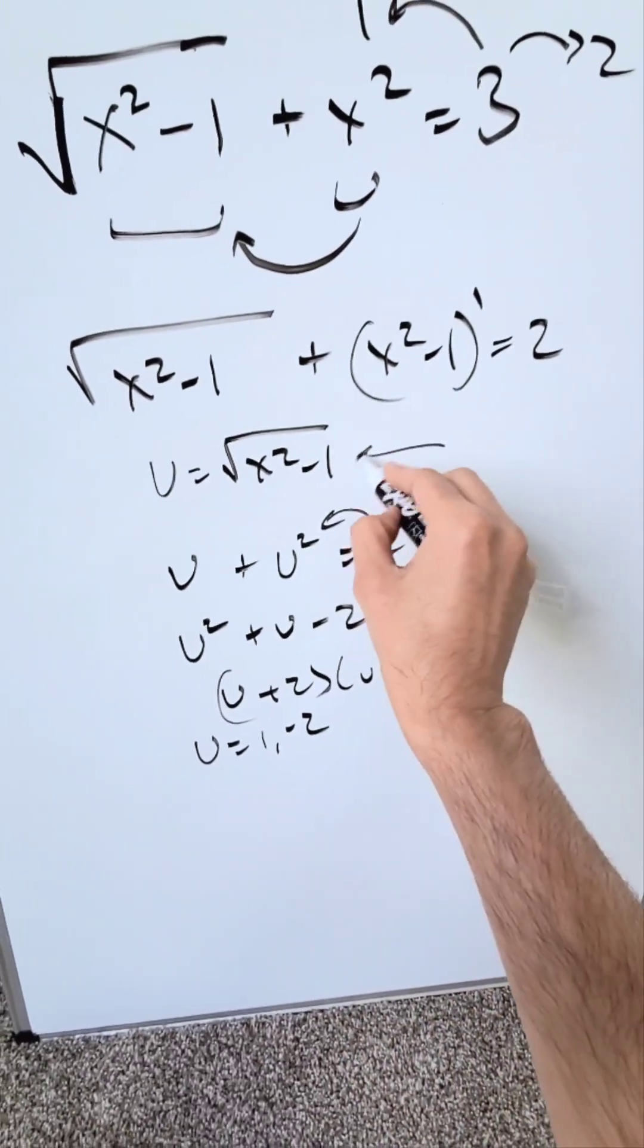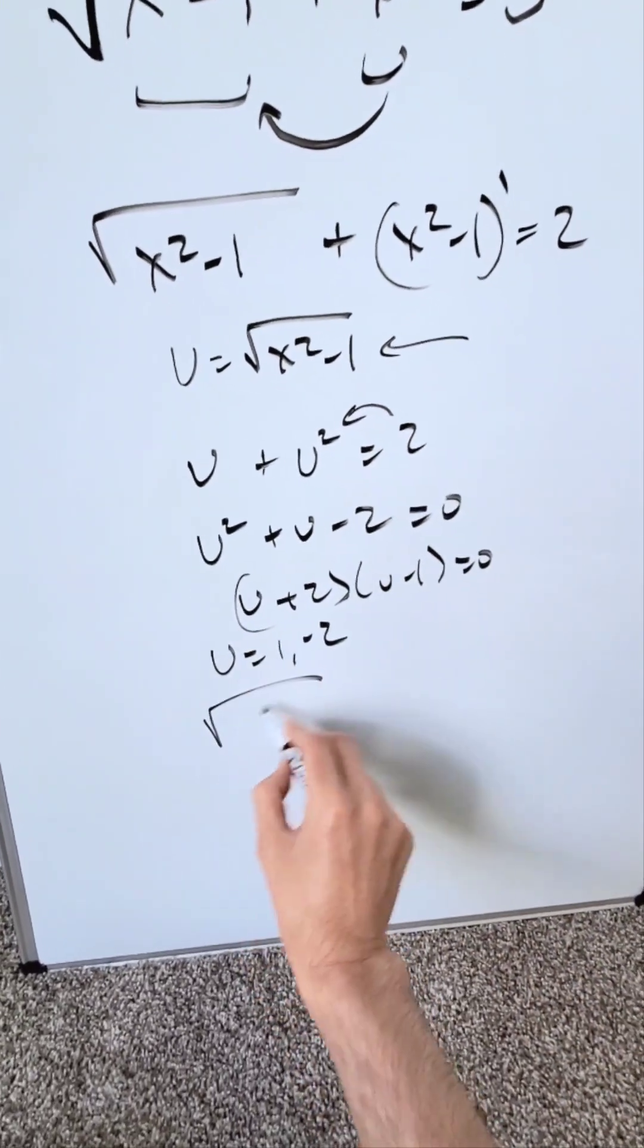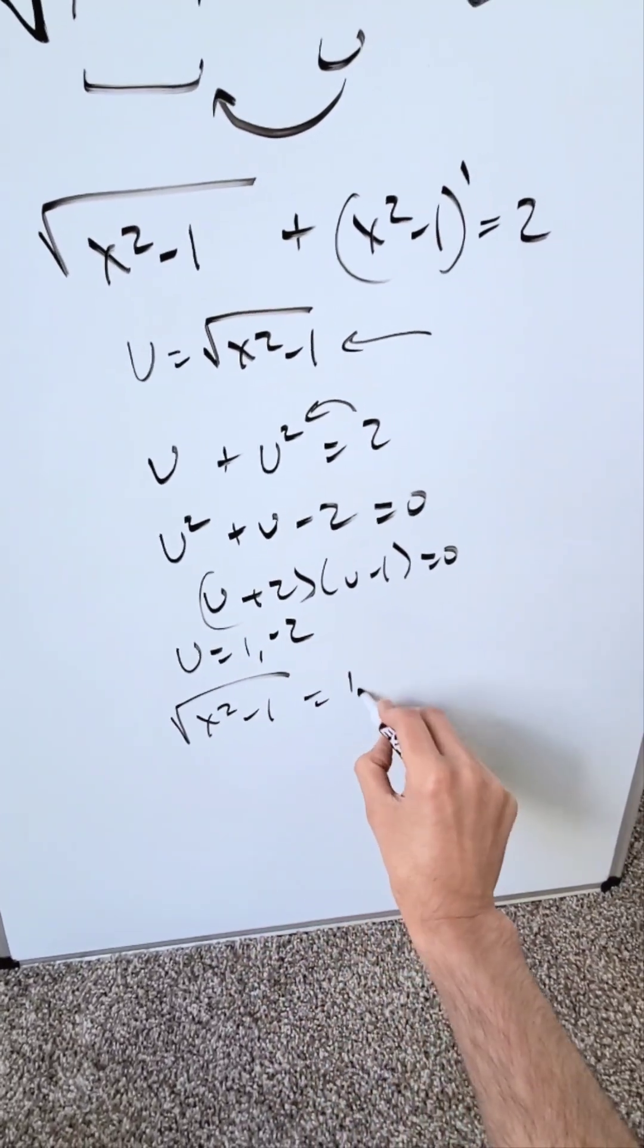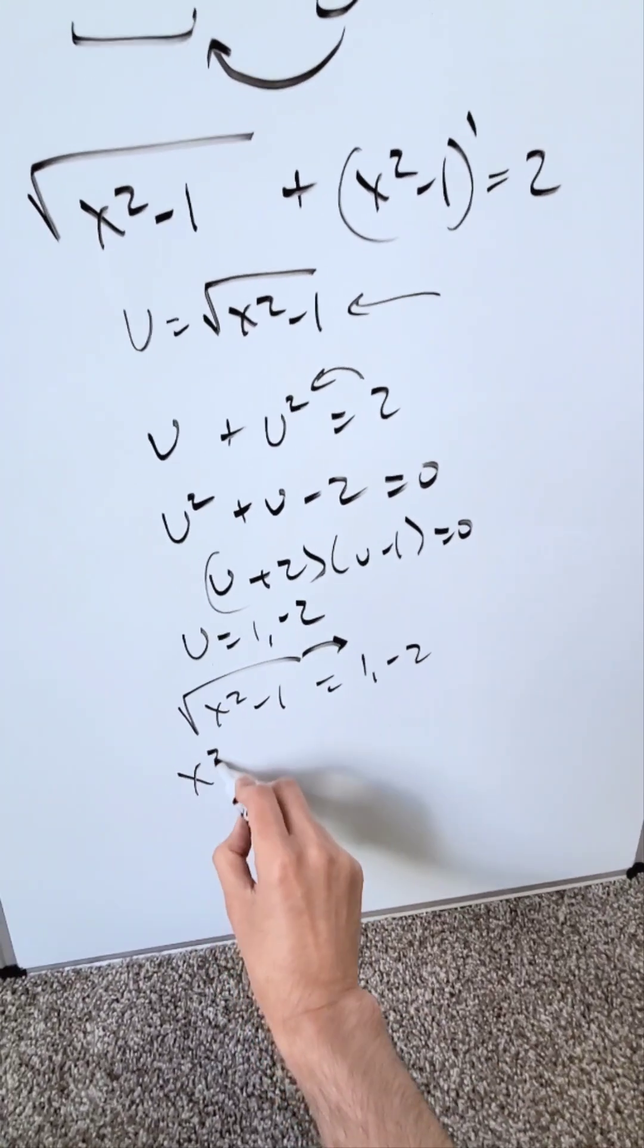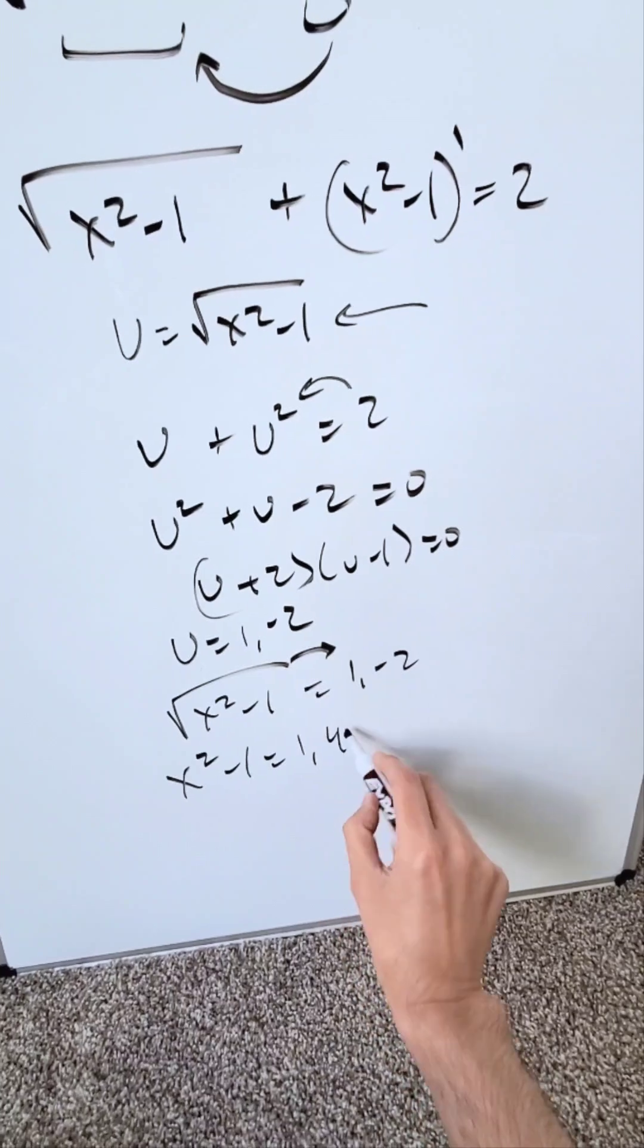But u = √(x²-1), so substituting back: √(x²-1) = 1 or √(x²-1) = -2. Squaring both sides gives x²-1 = 1 or x²-1 = 4.